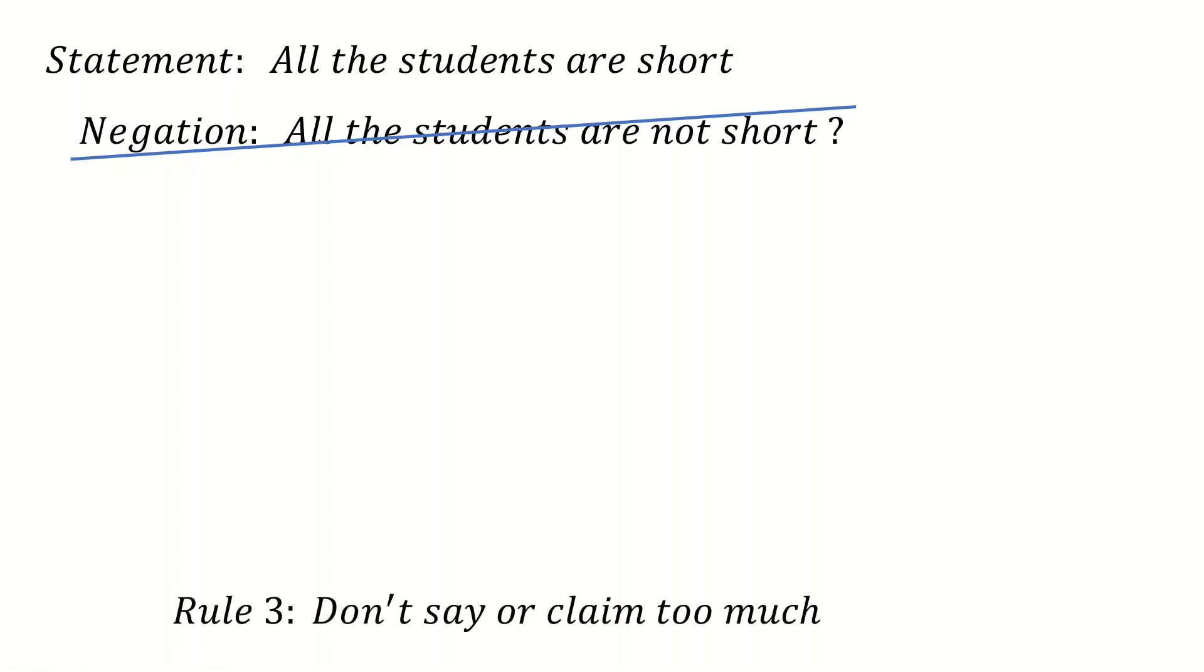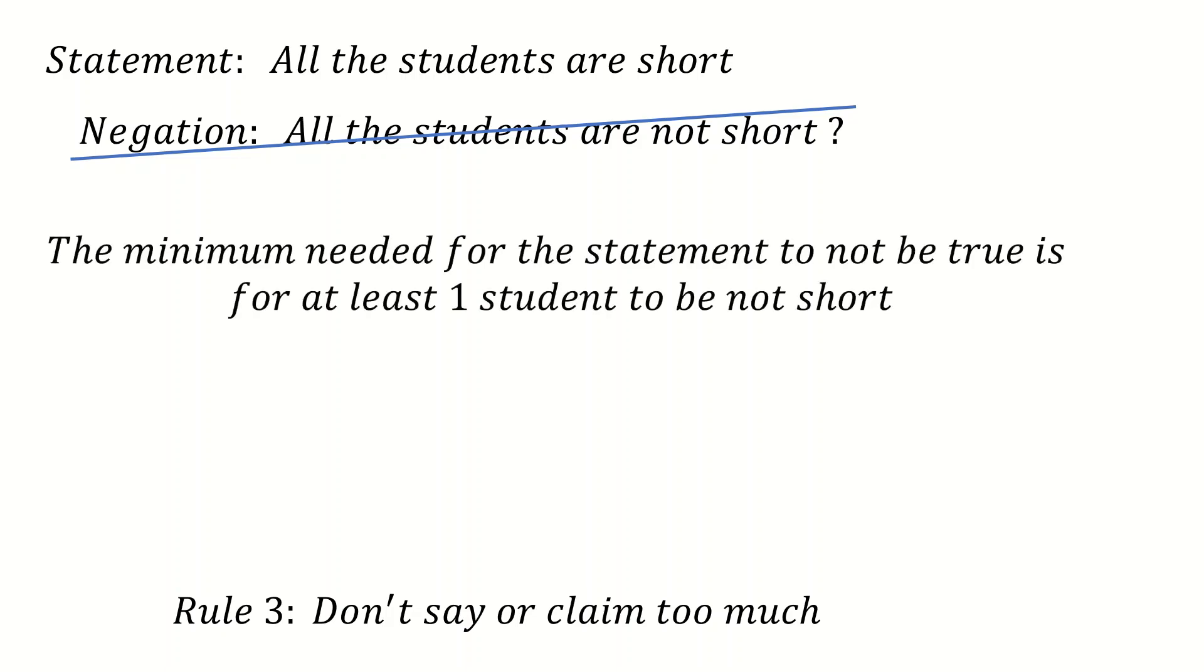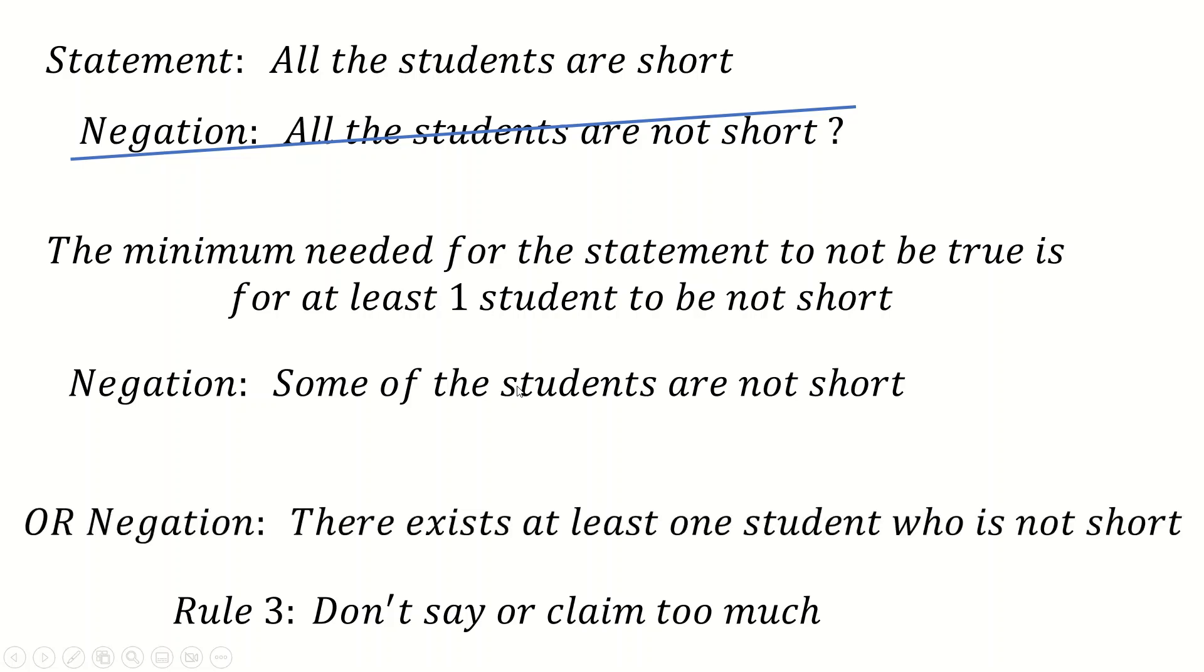So actually, we don't need all of them. So we're not going to use all in the negation. What we're going to say, and this is kind of rule of don't claim too much, don't go overboard. Claim the minimum amount that needs claiming. And the minimum amount here is just one student needs to be not short. So what we're going to say as the negation, the easiest way to say it is, some of the students are not short. The correct mathematical way would be this: there exists at least one student who is not short.